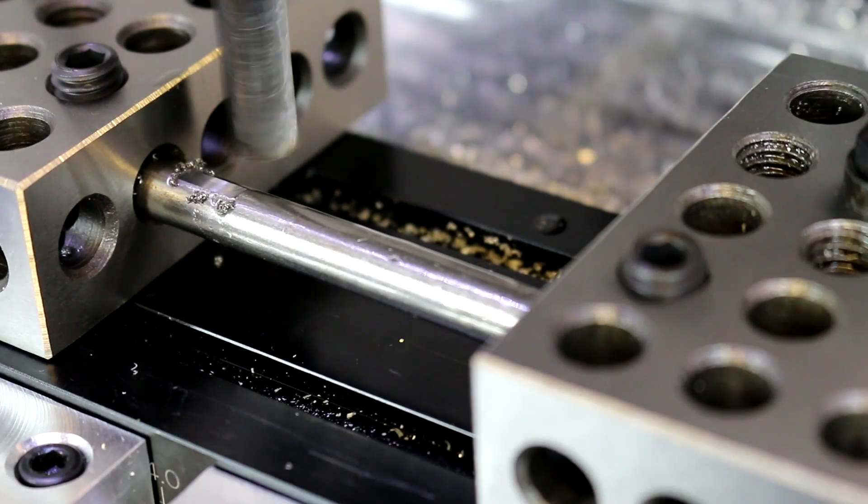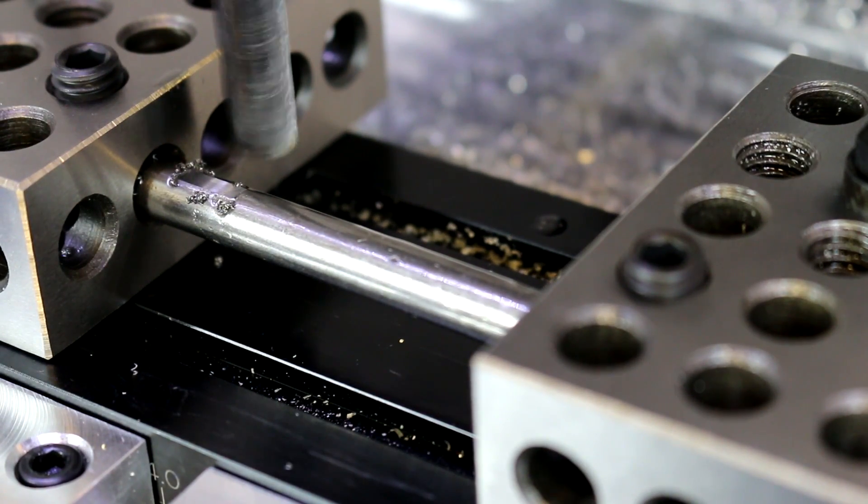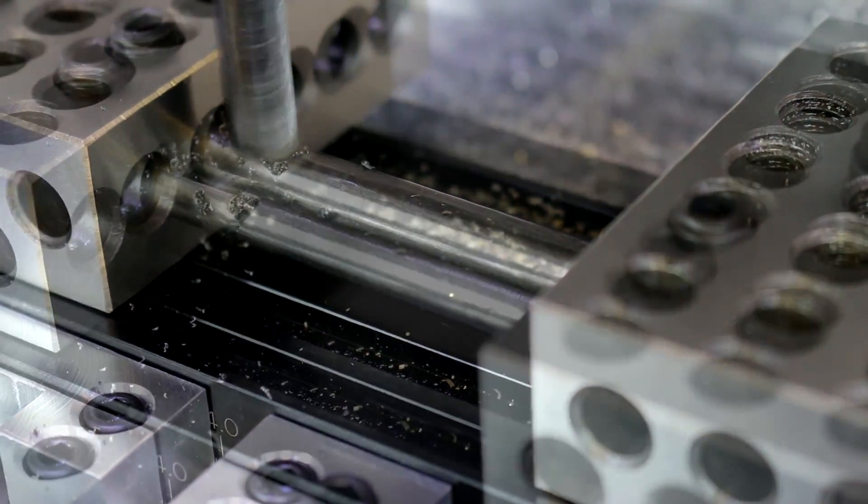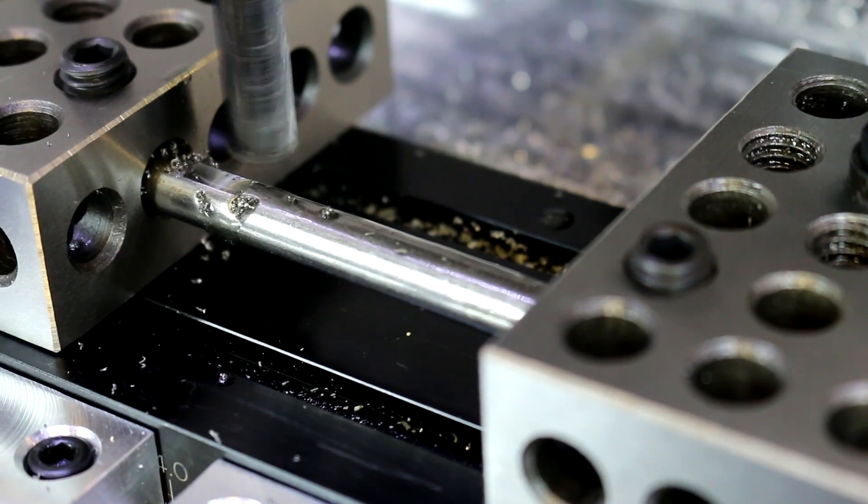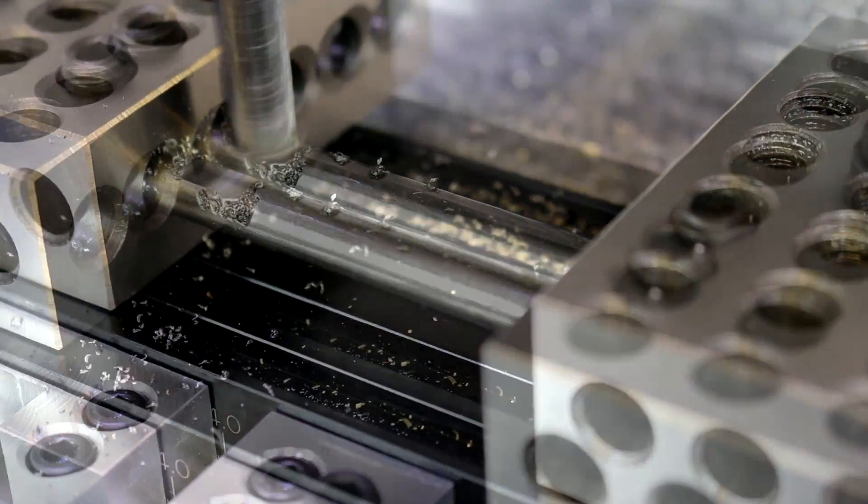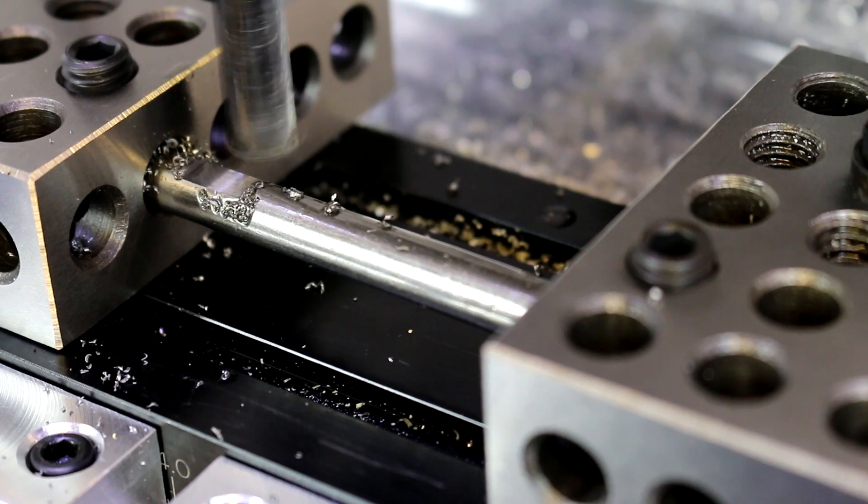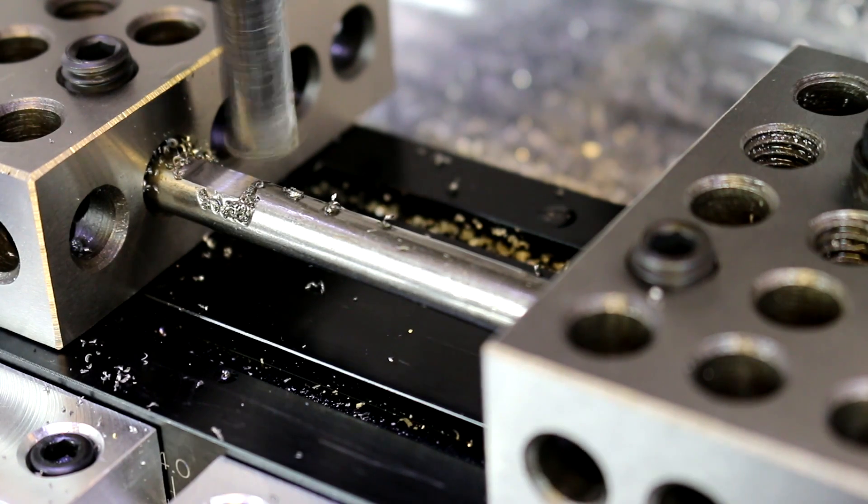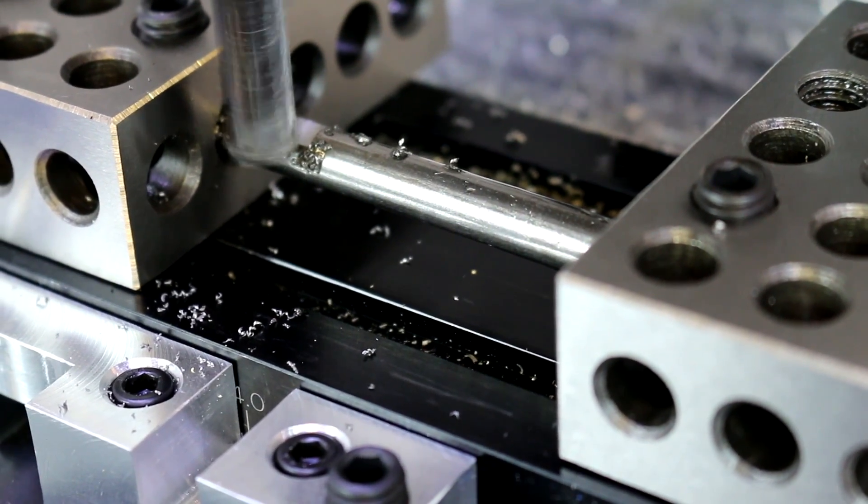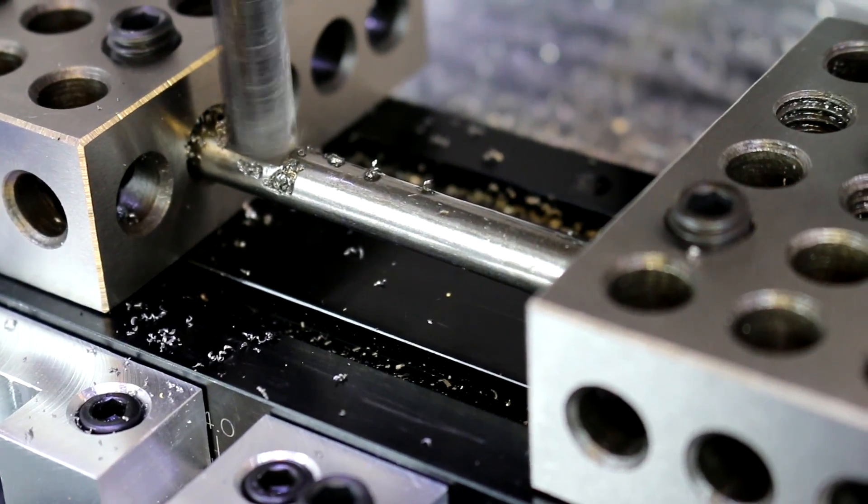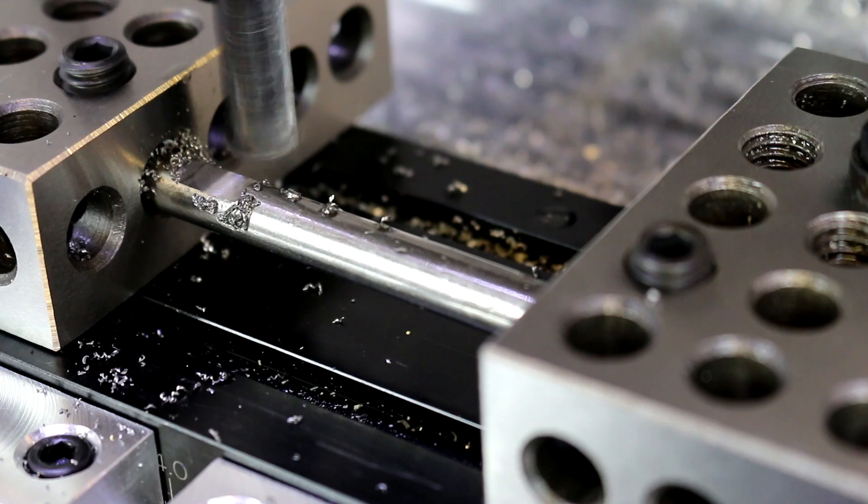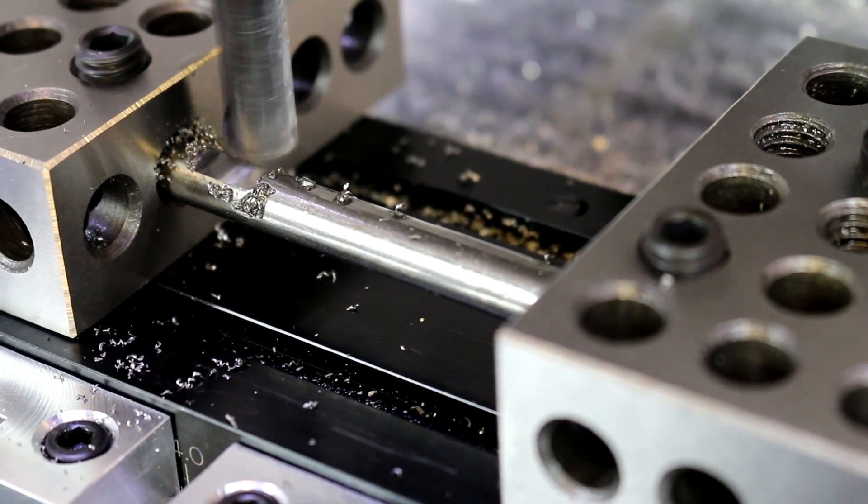Now I'm going to do another pass at a total, so another ten thousandths down. Now we're going to go fifteen thousandths. This material is cutting quite easily. It's definitely living up to its name of being free machining. I'm just going to take another ten thousandths cut here, and that's going to be what I want for my finished depth. That gives me a wide enough and flat enough surface for my needs.